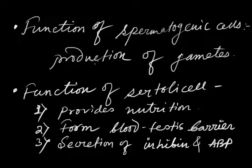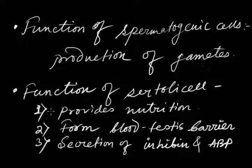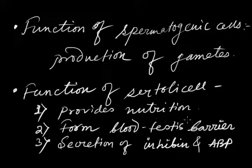Now the function of each type of cell. First, the function of spermatogenic cells: spermatogenic cells are solely involved in the development and formation of male gametes, i.e., sperm. The next important cell type is the Sertoli cell, which is also present inside the seminiferous tubule. They play various important functions, such as providing nutrition to the newly formed male gametes.